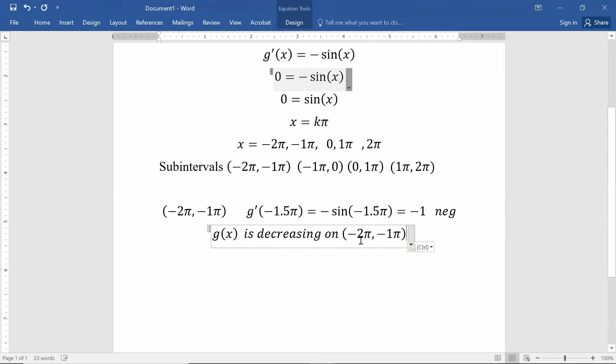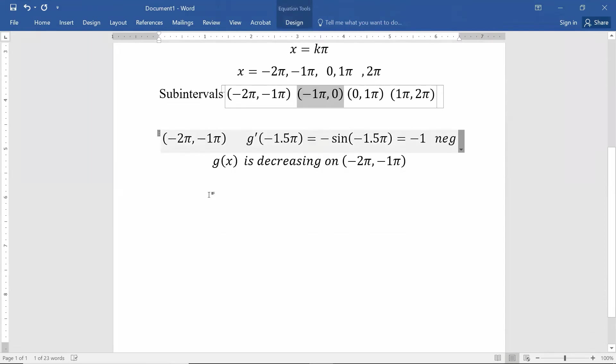Let's look at the next interval. Negative 1π to 0. We're going to plug in some number in between negative 1π and 0. This time, I'm not going to go halfway. I'm not going to do a negative 0.5. Rather, I'm just going to realize that 0 down to negative 1π is about negative 3.14. So if I just did a negative 2, I could plug that in.